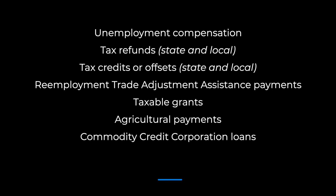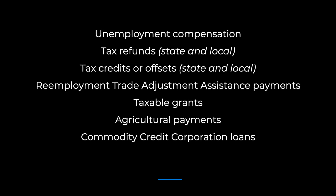Now let's go over its common uses. A Certain Government Payments Form is used for unemployment compensation, tax refunds, tax credits or offsets, re-employment trade adjustment assistance payments, taxable grants, agricultural payments, and commodity credit corporation loans.